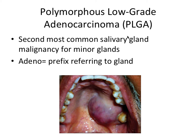Then we have the polymorphous low-grade adenocarcinoma, or PLGA. It's the second most common salivary gland malignancy for minor glands. Note that 'adeno' is a prefix referring to gland. Here it is again on the palate, looking pretty similar to the last one. The most important thing to know is that it's the second most common salivary gland malignancy.